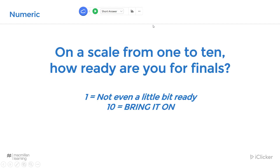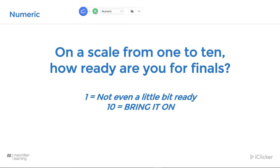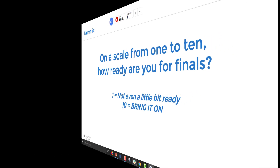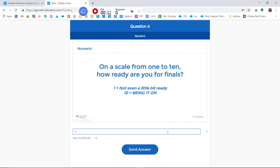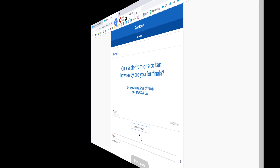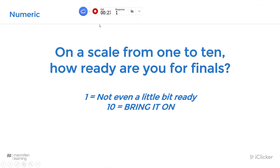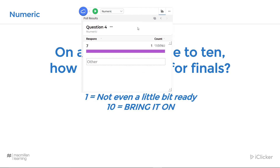This is an example of a numeric question. Simply select the question type from the drop-down menu and then click the play button. Here's what it looks like for students — they can answer with up to 8 digits and are limited to using numeric responses. When you're happy with the number of responses you've gotten, you can click the stop button. Again, you can click on the results button to view how your students have responded.